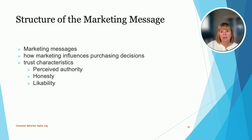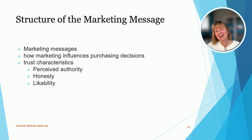Perceived authority refers to people we believe are experts — for example, you may trust a mechanic you've been taking your car to for a decade. Honesty is another factor: the more honest an individual seems, the more we may listen. Likability is also a factor in the consumer buying process — the more we like someone, the more likely we are to believe that person. Likable people also create genuine feelings that allow us to trust that individual.